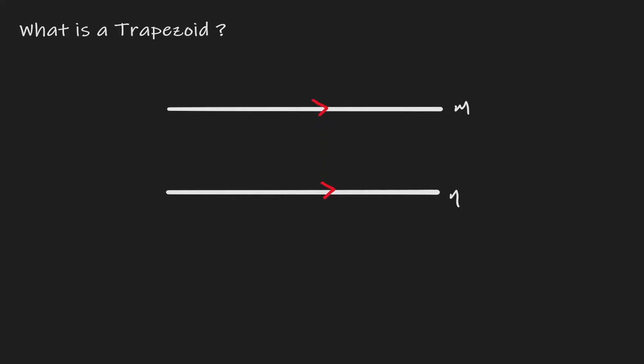Now let's choose two points on line M. Let me choose this point right here — let me call it A — and this point right here — let me call it B. And let me choose two other points on line N. Let me choose this point right here, call it C, and this point right here, call it D. Now what will happen if we connect all those four points?